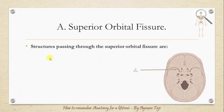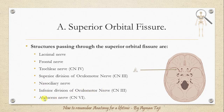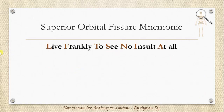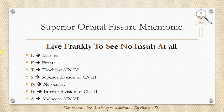Structures passing through the superior orbital fissure are: lacrimal nerve, frontal nerve, trochlear nerve, the superior division of the oculomotor nerve, the nasociliary nerve, the inferior division of the oculomotor nerve, and finally the sixth cranial nerve or the abducens nerve. You can remember them with the mnemonic: 'Leave frankly to see no insult at all' — Lacrimal, Frontal, Trochlear, Superior oculomotor, Nasociliary, Inferior oculomotor, and Abducens.